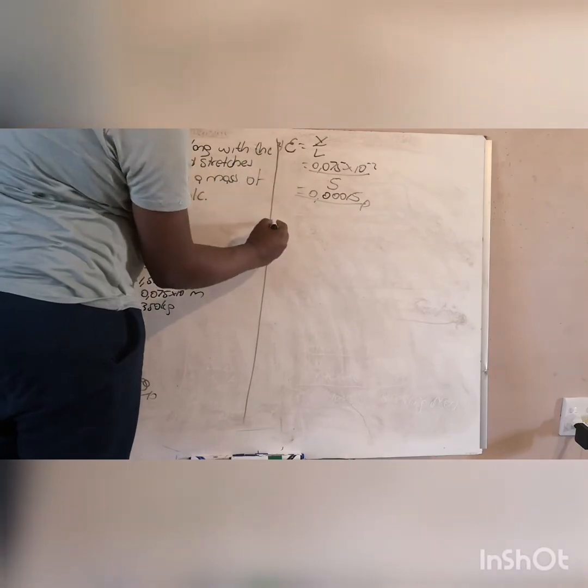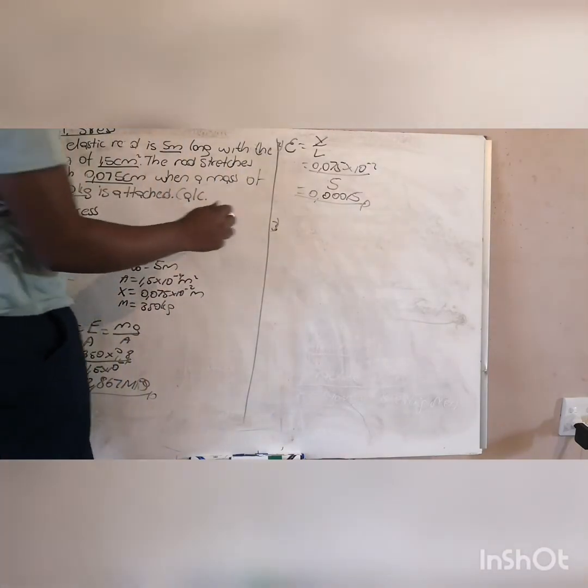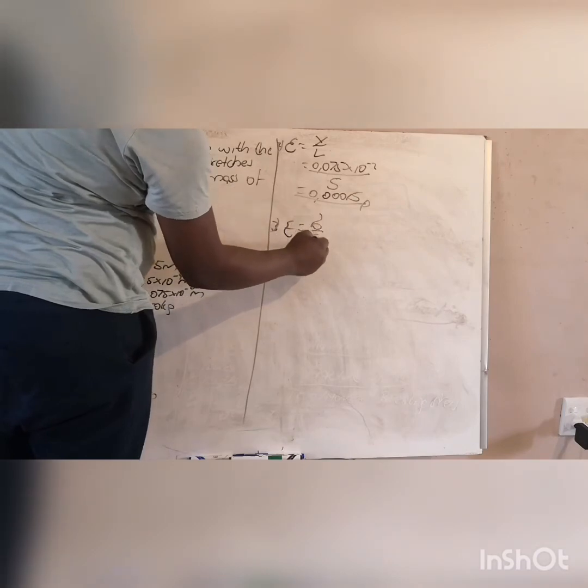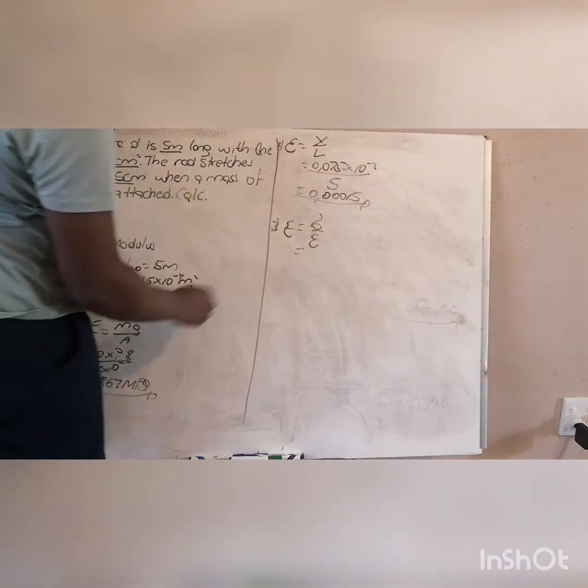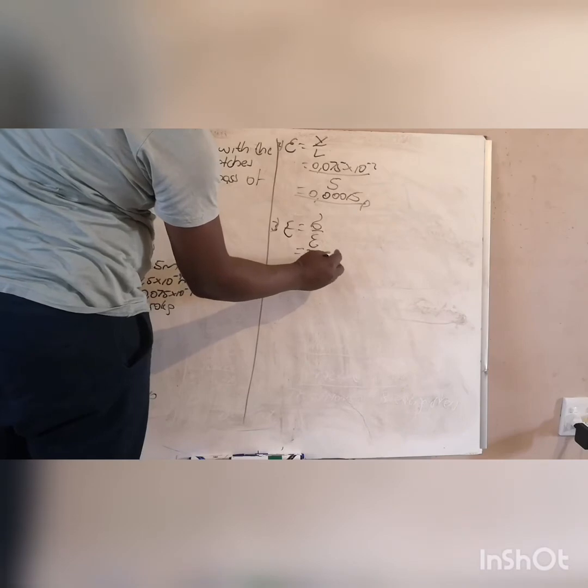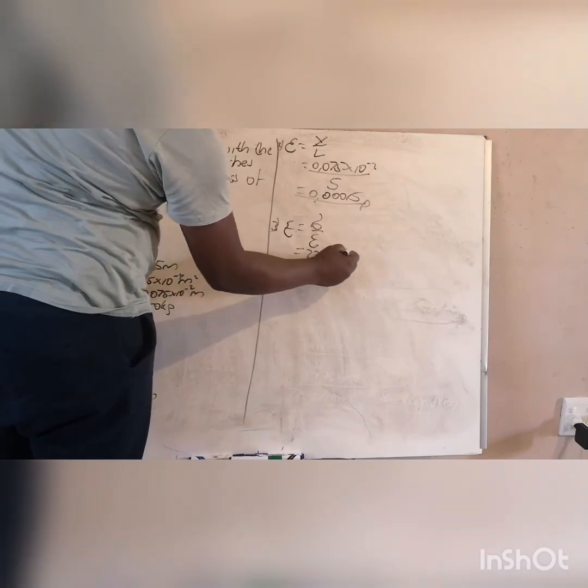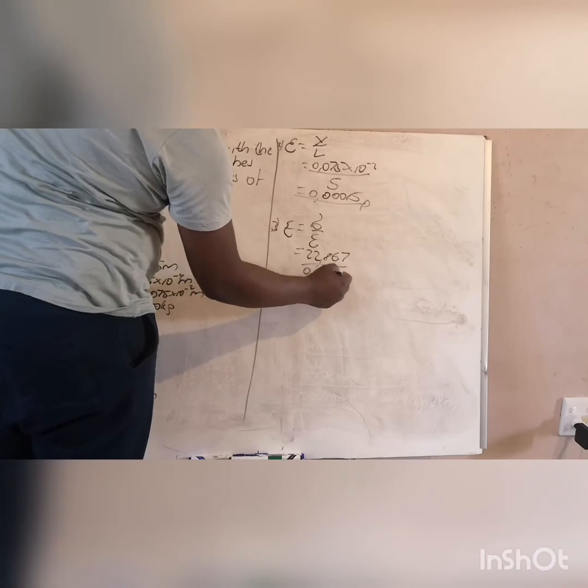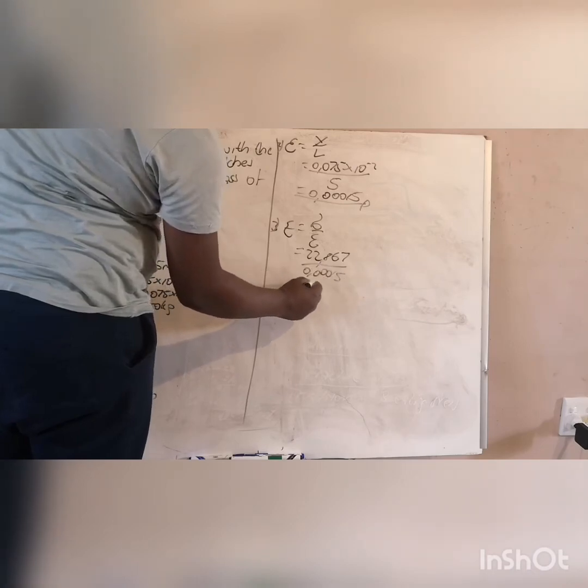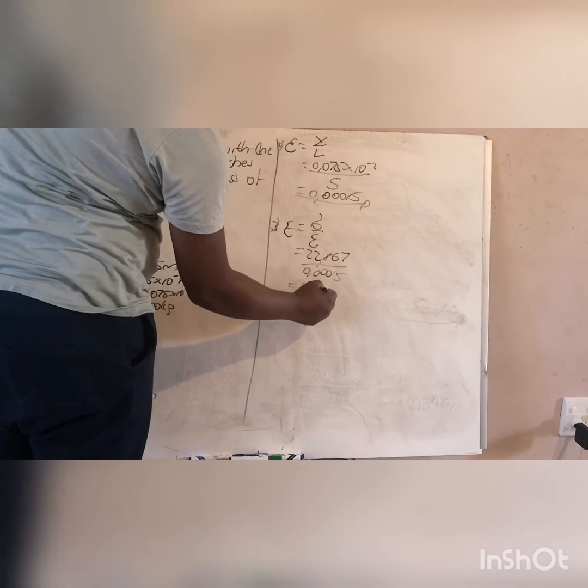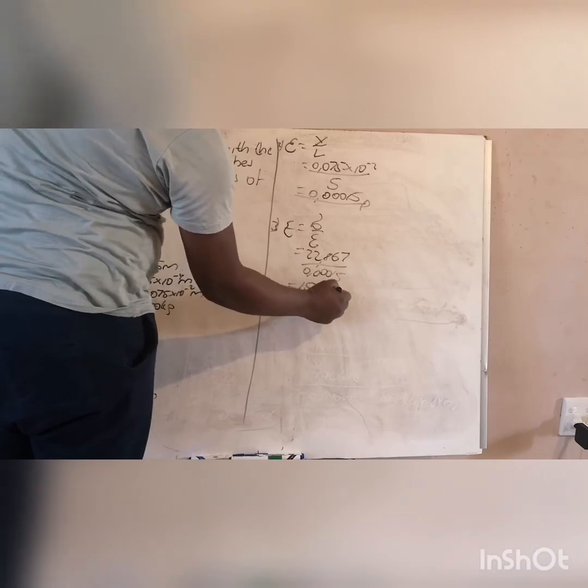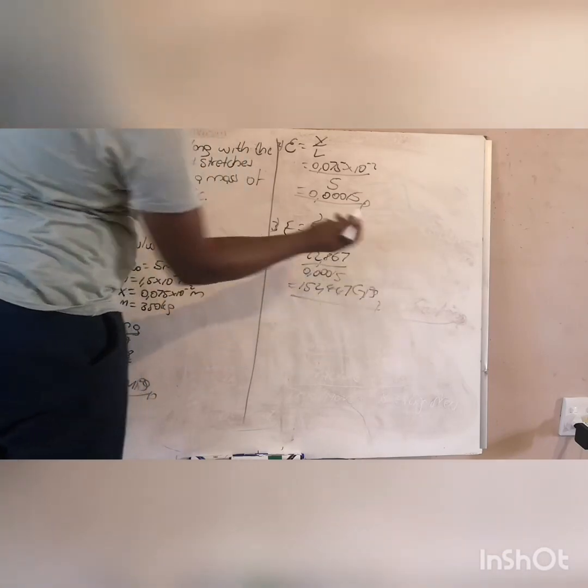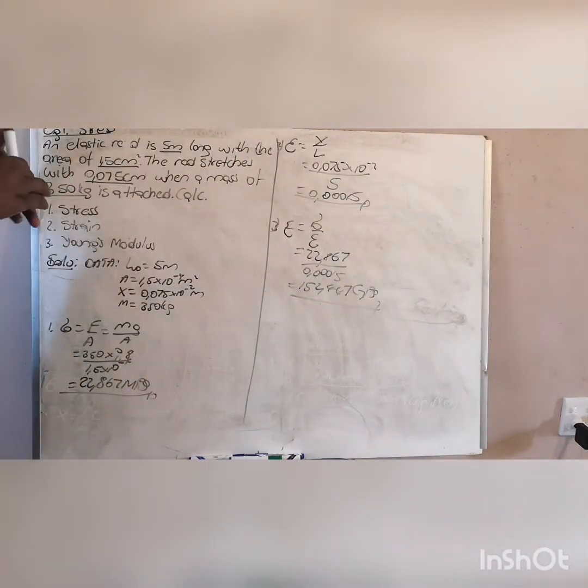That was your strain. Your last one, Young modulus, is stress over strain, meaning it is 22,867 over 0.0015, and then your modulus is 152.447 giga pascals. So this was the easiest one.